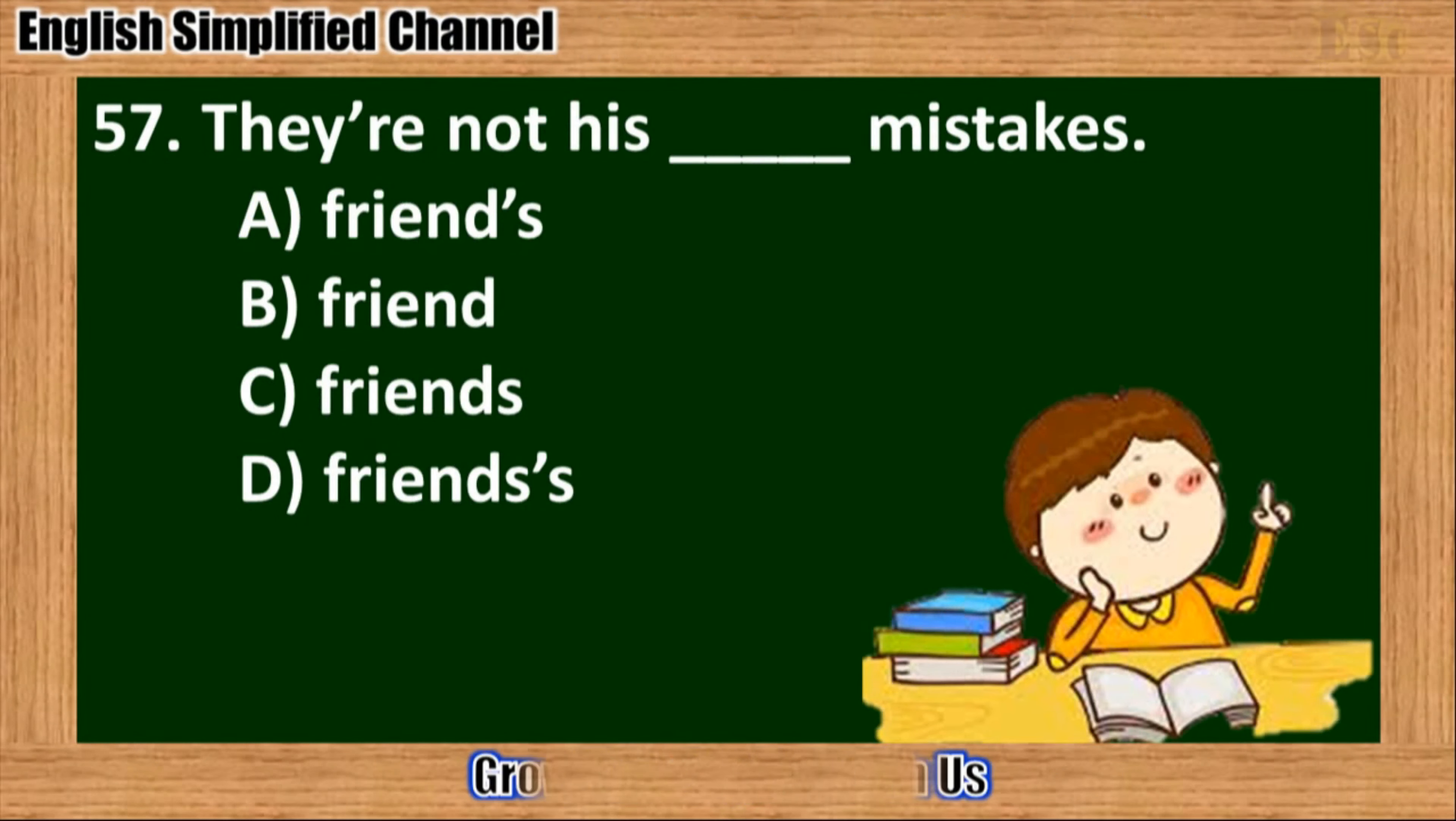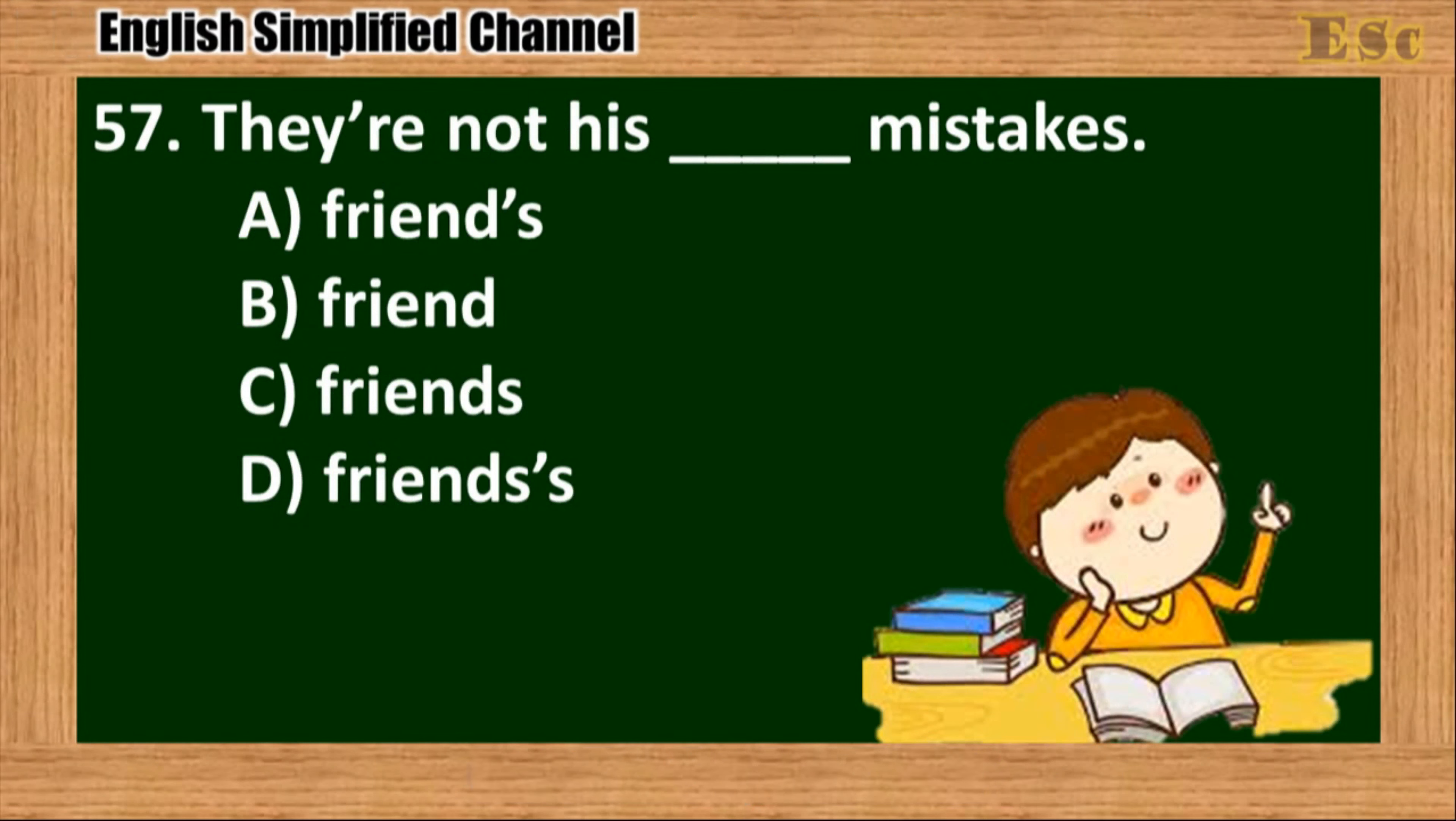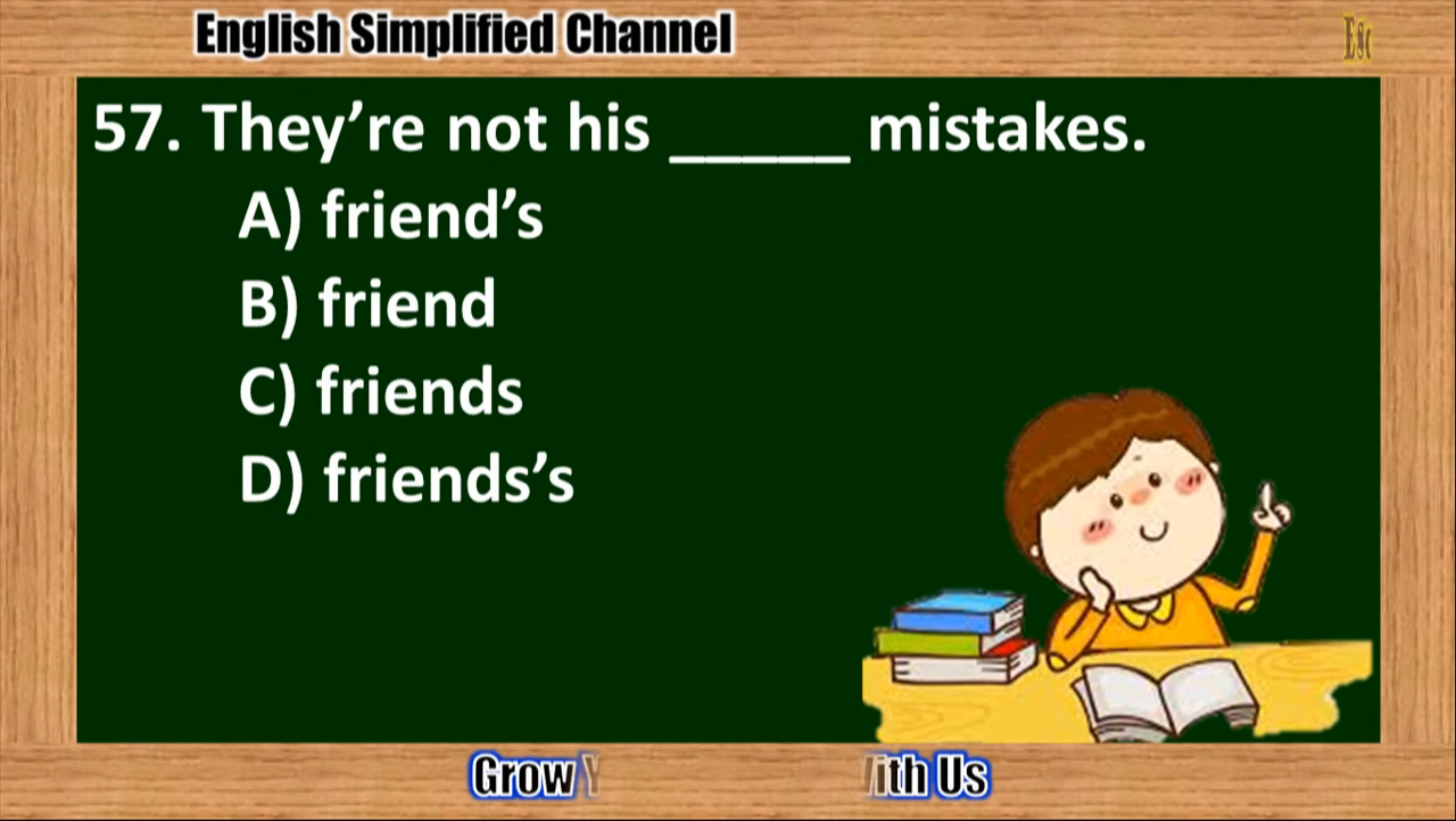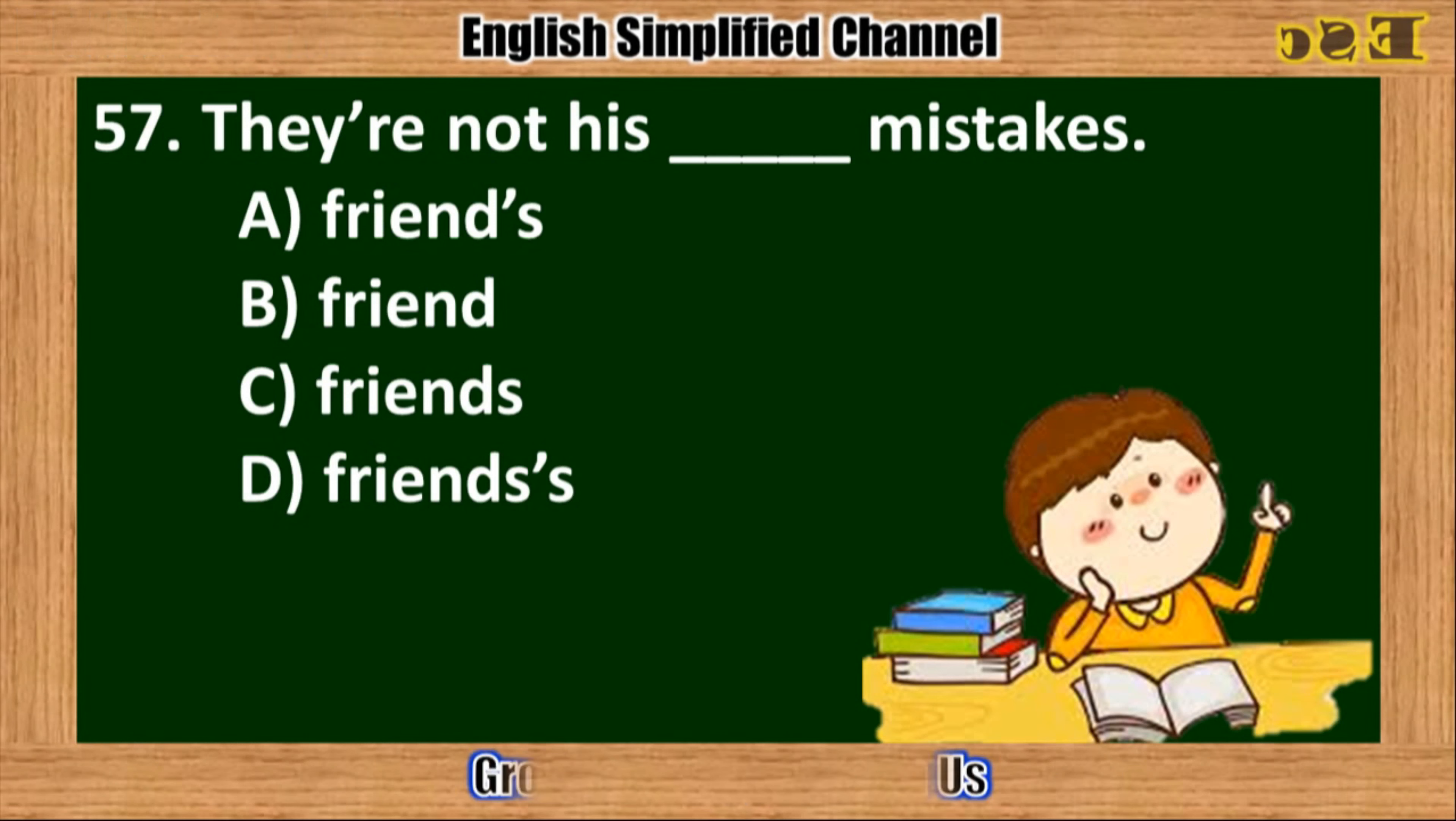57. They're not his blank mistakes. A. Friends. B. Friend. C. Friends. D. Friends S.